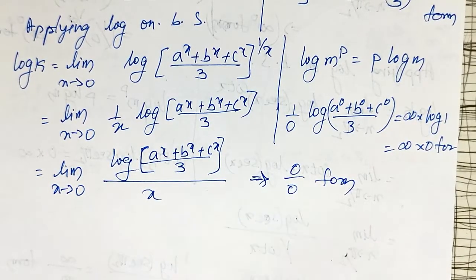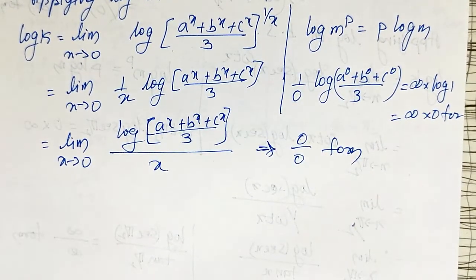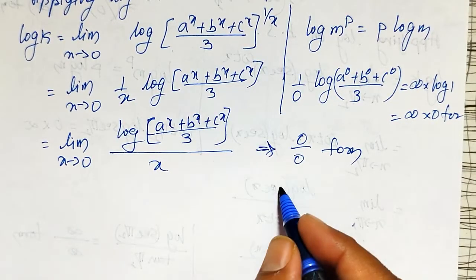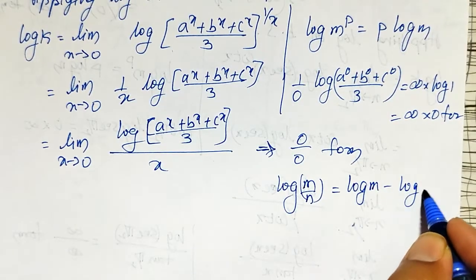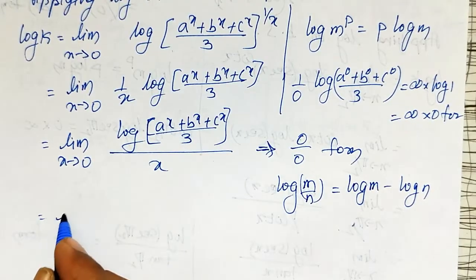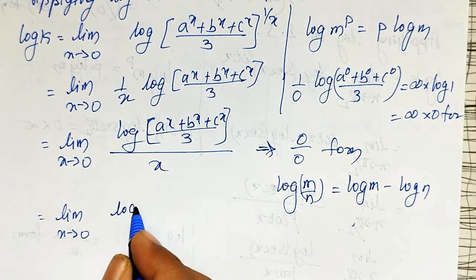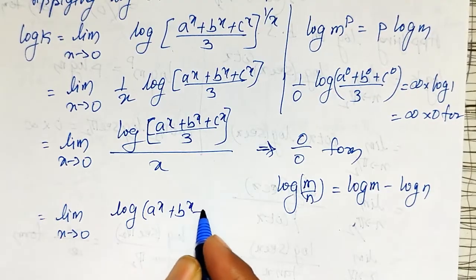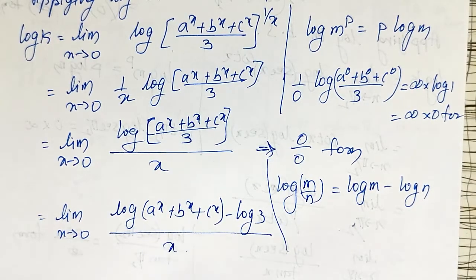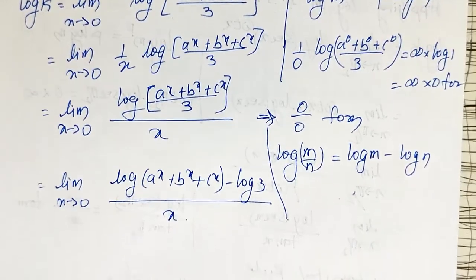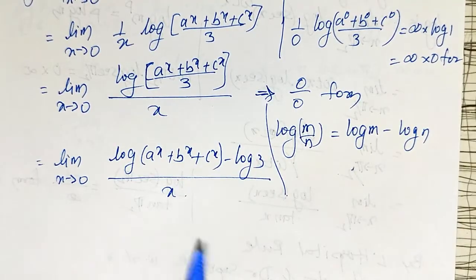Now it has reduced into the 0/0 form, so I can apply L'Hôpital's rule. Before that, to simplify differentiation, I will use the log property: log(m/n) = log(m) − log(n). So the numerator becomes log(a^x + b^x + c^x) − log(3), all divided by x. This is again confirmed as the 0/0 form since log(3) − log(3) = 0.